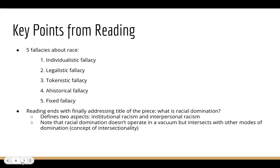The book then addresses what they identify as the five fallacies about race or racism. The first is the individualistic fallacy — the idea that racism largely exists at the individual level, where racist people have prejudices and beliefs and maybe even act on them in individual acts of racial discrimination or racialized violence. But this is a fallacy because it ignores the ways racism has been woven into our social institutions and social policies.